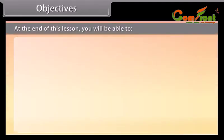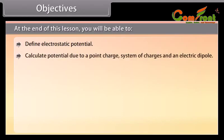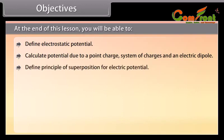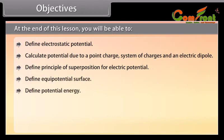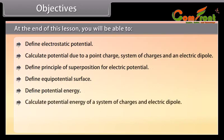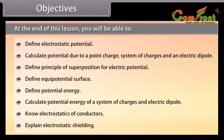At the end of this lesson, you'll be able to: define electrostatic potential; calculate potential due to a point charge, system of charges, and an electric dipole; define the principle of superposition for electric potential; define equipotential surface; define potential energy; calculate potential energy of a system of charges and an electrical dipole; and explain electrostatic shielding.